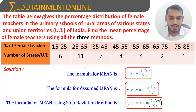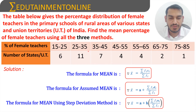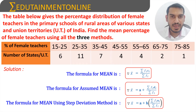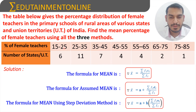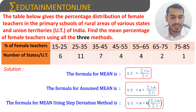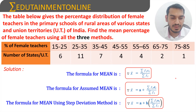The number of states is taken as fi. xi is the midpoint of each class interval, calculated as (lower + upper) / 2. In the assumed mean method, 'a' is the assumed mean, and di = xi − a. In the step deviation method, h is the class width (or GCD of xi values), and ui = (xi − a) / h.